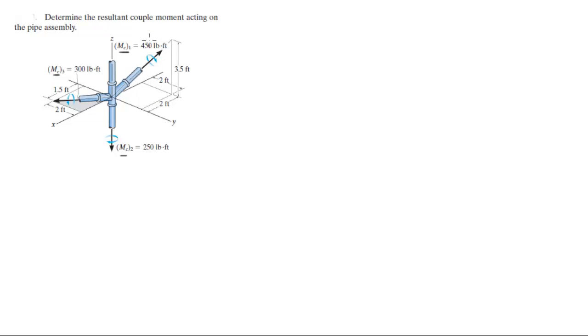Now remember, when they give you a vector magnitude and where it's aiming, what you need to do is find the unit vector and multiply by the magnitude to find the Cartesian vector form of the moment.